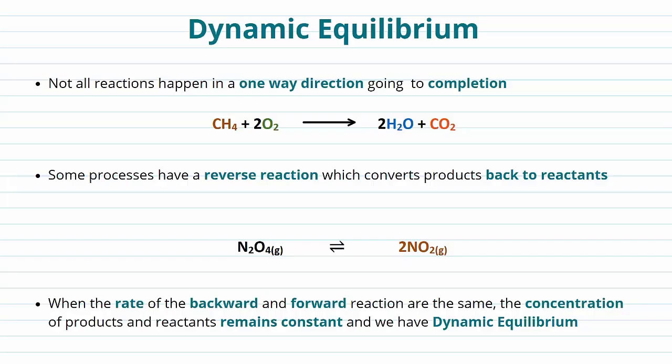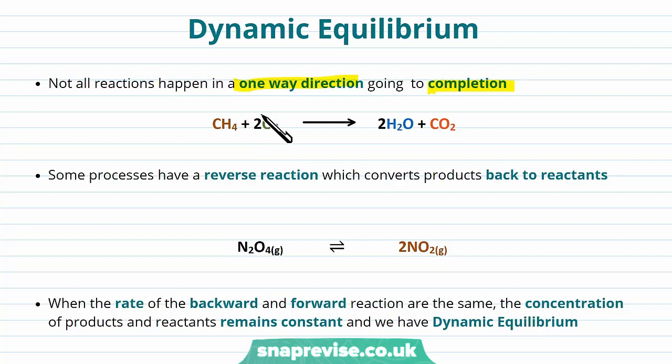You'll have met equilibrium and dynamic equilibrium before, but it's important to recap before we start talking about Kc. Not all reactions happen in a one-way direction going to completion. An example of one that does is when we burn methane — the methane combines with oxygen to form water and carbon dioxide, and more or less all of the reactants are converted into products. But some processes have a reverse reaction, which converts the products back to reactants.